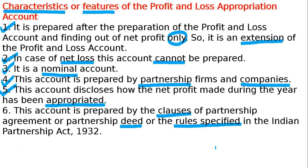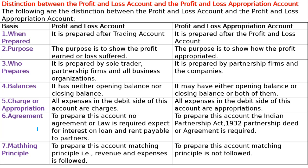Appropriation is keeping aside from profit — salary to partners, interest on capital, partners' commission, and other such items. These are called appropriations, not expenditure. This was characteristic six, and that covers all the characteristics of the profit and loss appropriation account.